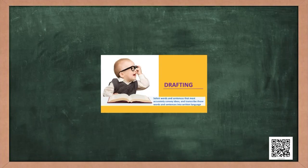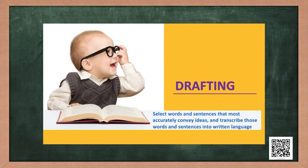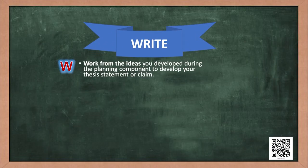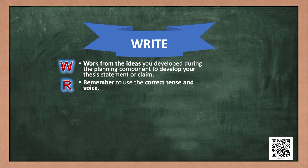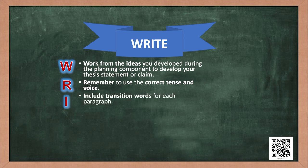Now let us move to the next stage — drafting. During this stage you select words and sentences that most accurately convey ideas and transcribe those into written language. Now that the plan is ready, start writing. The word WRITE is also an acronym: W — Work from the ideas you developed during planning; R — Remember to use the correct tense and voice; I — Include transition words for each paragraph; T — Try to use different kinds of sentences; and E — use Exciting, interesting words.